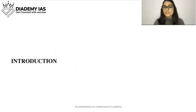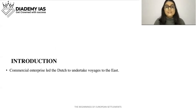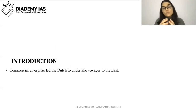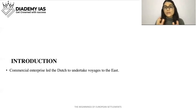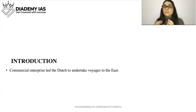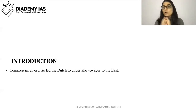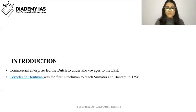Commercial enterprise led the Dutch to undertake voyages to the east. Just as we saw earlier, when Vasco da Gama came to India, everyone came to know how profitable trade with India was. Vasco da Gama earned so much profit that other European merchants understood that trade with India is very profitable. Similarly, Dutch commercial enterprise also came here to trade in the east. Cornelis de Houtman was the first Dutchman to reach Sumatra and Bantam in 1596.